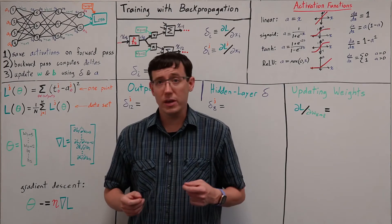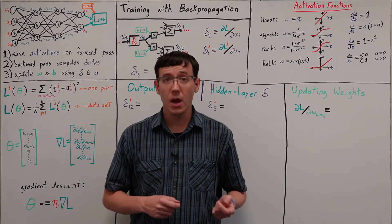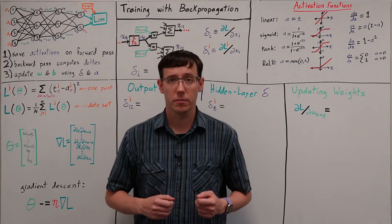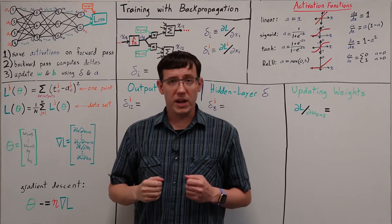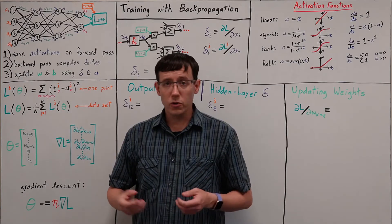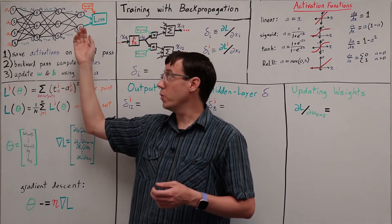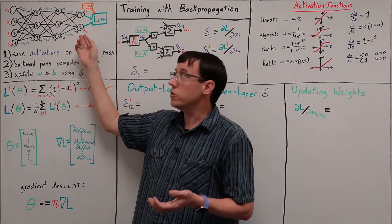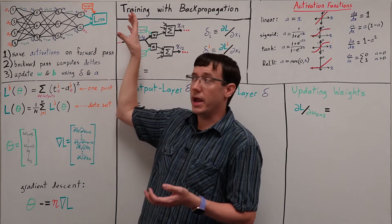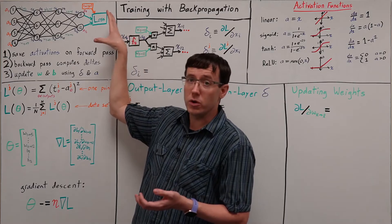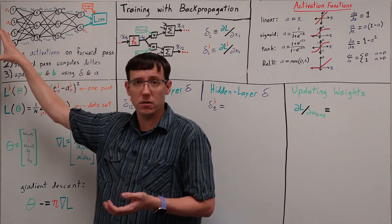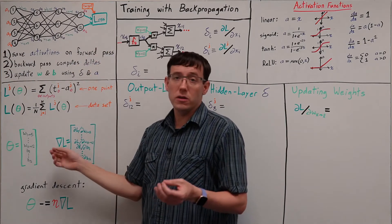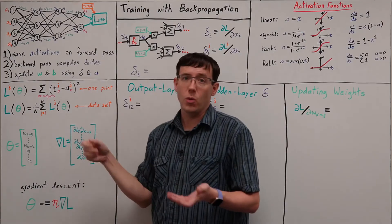In this video, we're going to derive the backpropagation algorithm, which performs a step of stochastic gradient descent for training a neural network. The algorithm for this update proceeds in three steps. First, we use a feed-forward pass to make a prediction on some data point. The predicted outputs determine the loss, and we next perform a backward pass to compute partial derivatives of that loss, and a final pass through the network modifies its parameters using the partial derivatives to update the weights and biases.